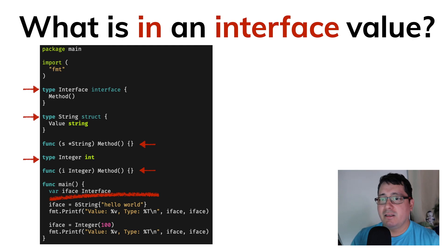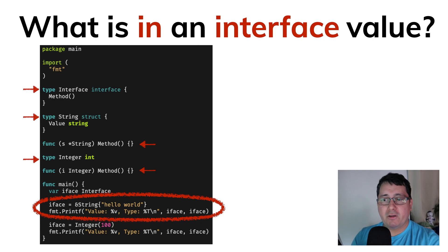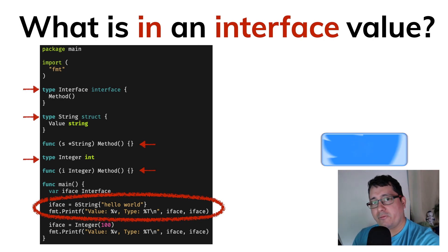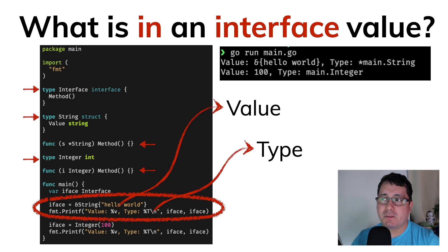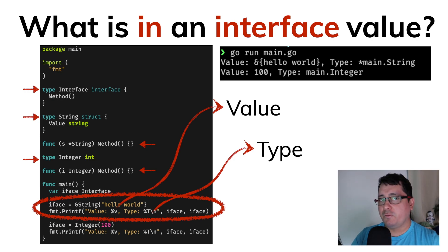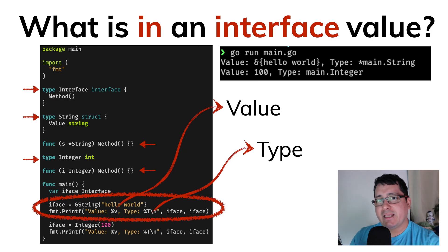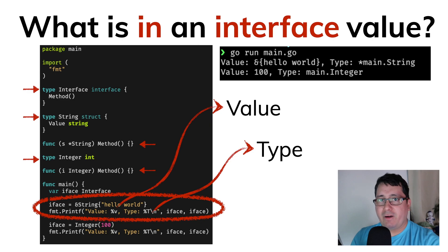The important thing I want to call out is this piece of code that is printing out the value and the type of the variable. If we call those things, what will print out is: 'v' in the context of printf prints the value of that variable, and 'T' uppercase will print the type. The interface value will have two things: the value and the concrete type.